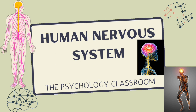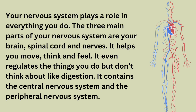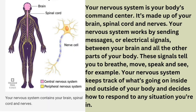In this lecture, we will discuss a basic introduction to the human nervous system. The nervous system plays a role in everything you do. The three main parts of the nervous system are the brain, spinal cord, and the nerves. It helps you move and feel. The nervous system is your body's command center. It works by sending messages or electrical signals between the brain and other parts of the body.